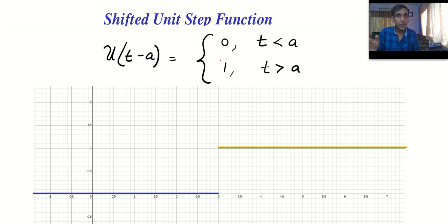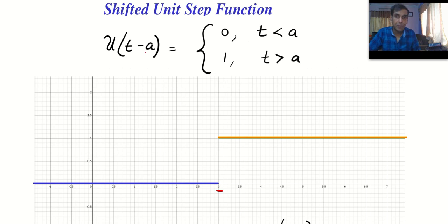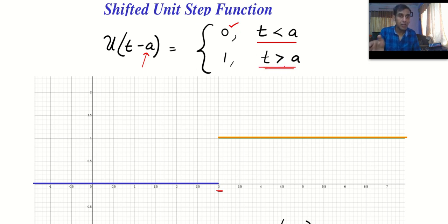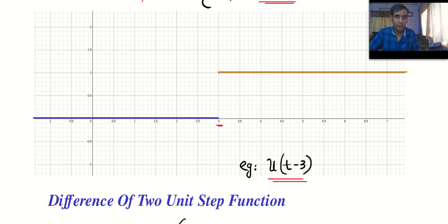Now you have to understand the shifted unit step function. You choose any number — here I have taken the number 3. The shifted unit step function u(t − 3) outputs 1 after 3 and 0 before 3. In general, for any number a, if t < a the output is 0, and if t > a the output is 1. The graph makes things easier to understand.